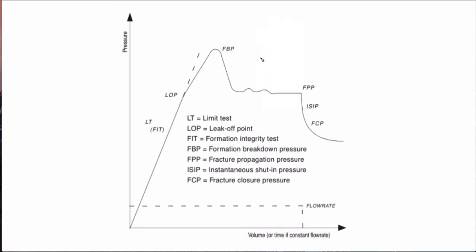If you begin to pressure up, you'll start off at a constant rate because you have a fixed volume — essentially the volume of the wellbore — so you have a fixed volume and you're just pumping fluid into it. The pressure's going to go up at a constant rate; if you're flowing into it at a constant rate, pressure's proportional, so it's just going to go up at a constant rate.